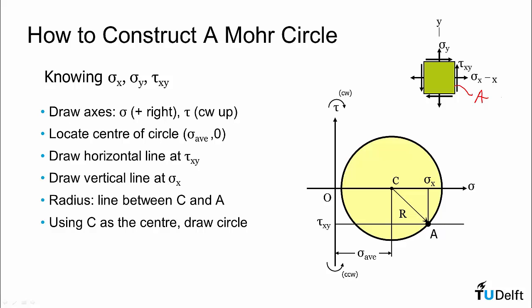However, we also know another point on the Mohr circle, and I will call this face B, and it is tau xy that produces a clockwise rotation, and sigma y coming up, and that produces point B on my circle.